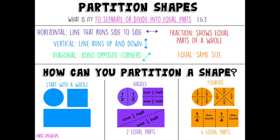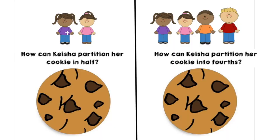Now let's get some practice in actually partitioning the shapes. One day Keisha had a cookie and she wanted to share it with her friend. She knew that since it was two of them and she wanted each of them to get an equal part of the cookie, she needed to partition her cookie in half, so that way the cookie would be split into two equal parts. How can Keisha partition her cookie in half?